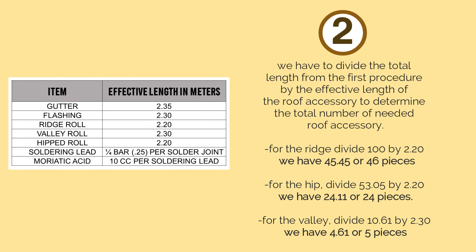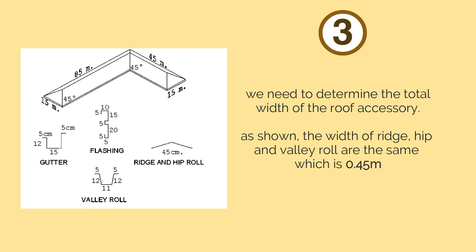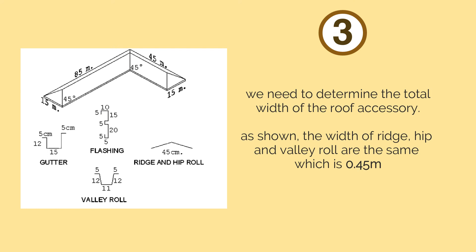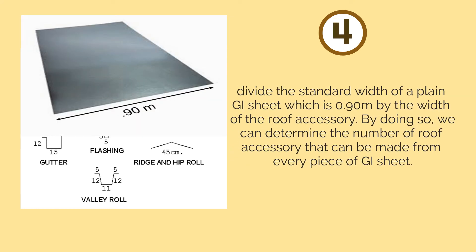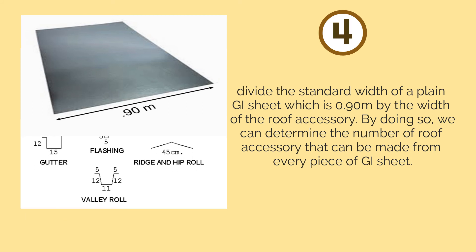Note that the effective length of these roofing accessories are different — refer to the table shown for their effective length data. Third procedure: determine the total width of the roof accessory. The width of ridge, hip, and valley rolls are the same at 0.45 meter. Fourth procedure: divide the standard width of a plain GI sheet, which is 0.90 meter, by the width of the roof accessory. Since ridge, hip, and valley rolls all have 0.45 meter width, we divide 0.90 by 0.45, giving a result of 2 pieces per GI sheet.